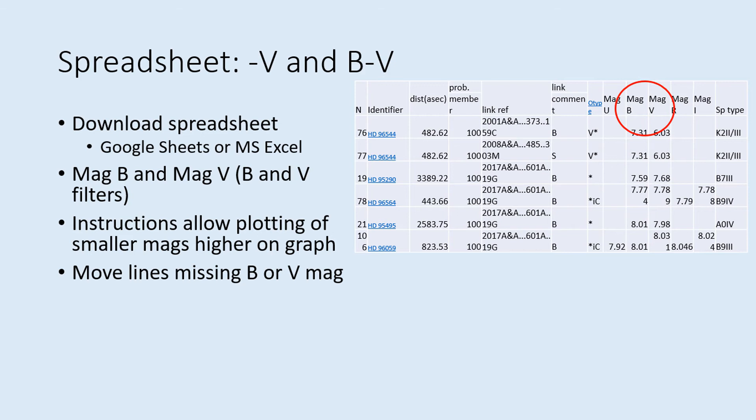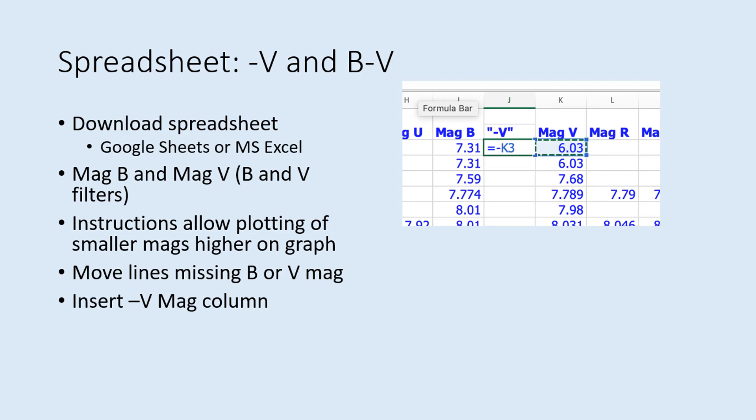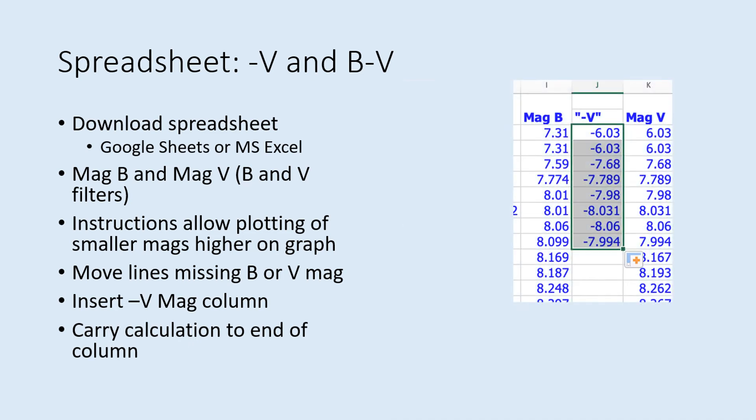Then you insert a new column called minus VMAG. As the name suggests, this will be the negative of the V magnitudes. Note that you may have to put the title in quotation marks to avoid an error. You don't have to type in all the values in the column yourself. Instead, set up the function in the first cell below the header and type in the equation. Start with the equal sign, then the minus sign, and finally the cell reference for the first V magnitude. Once you've done one, you can carry the calculation down the row. In Excel, you grab the dot in the corner and pull it down.